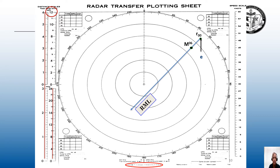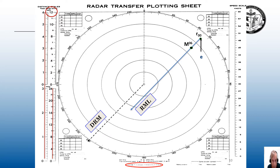From this relative motion line, you can obtain four of the six solutions: direction of relative motion, speed of relative motion, closest point of approach and bearing of CPA, and time to closest point of approach. Let's find directional relative motion first. We're going to parallel or move this relative motion line to the middle and put a little tick mark down here. So the direction, or DRM, of relative motion is 220 degrees.